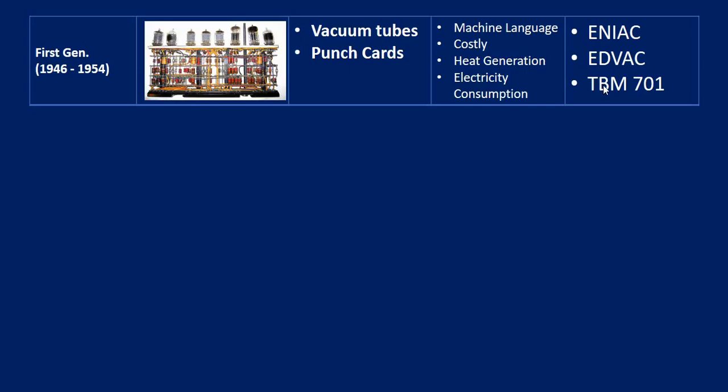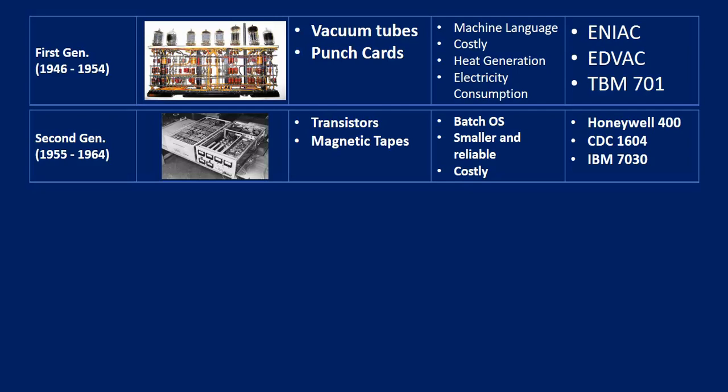Summarizing: first generation computers used vacuum tubes and punch cards, with machine language only, heat generation and electricity consumption problems — examples being UNIVAC and ENIAC. Second generation computers used transistors and magnetic tapes, with batch OS — though there was barely any real OS meaning at that time. They were smaller and reliable but costly. Examples: Honeywell 400, CDC 1604, IBM 7030.